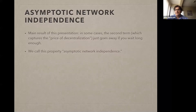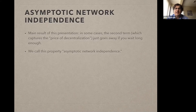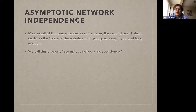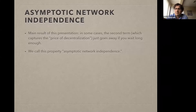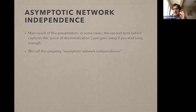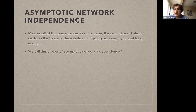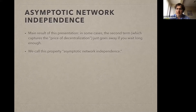So here is the main result, presented in a common framework. The idea is that if t is large enough — if you run the algorithm for long enough — and if you have the right algorithm, that second term, the price of decentralization that depends on 1/(1-lambda), just disappears. All you're left with is the performance of a centralized method that has access to the same computational power as the entire network — the power to query all the gradients in parallel. I call this asymptotic network independence.